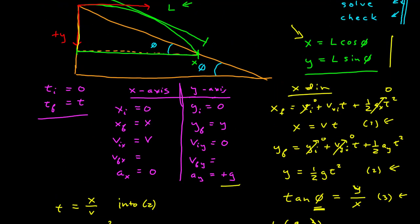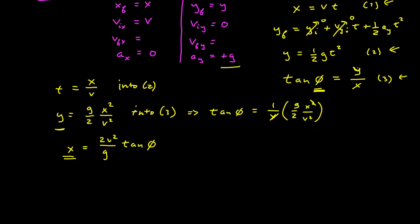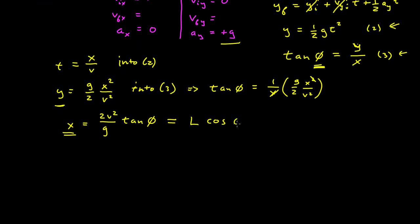So this is equal to the length down, which is what we initially needed to know, times cosine of phi. And now we can solve for our final answer. Our length is equal to 2 v squared over g tangent phi over cosine phi.